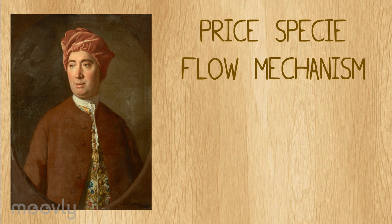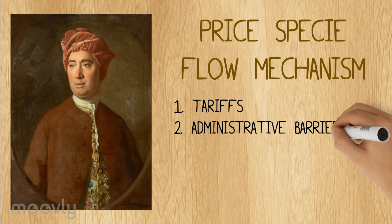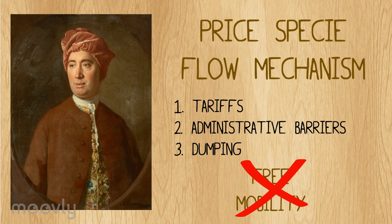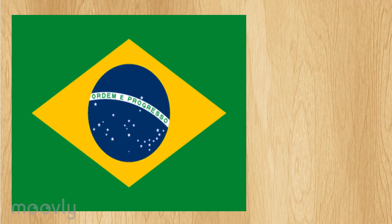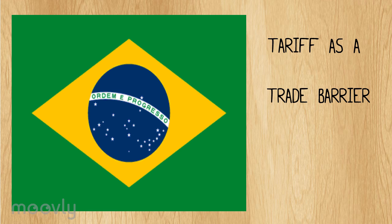Nevertheless, the assumptions of this economic theory are based on free trade, and due to protectionism such as tariffs, administrative barriers, and dumping, there is no free mobility of goods and services. So, what has the Brazilian government done to eliminate these friction-causing terms? Well, the Brazilian government set a tariff as a trade barrier on Chinese car imports.